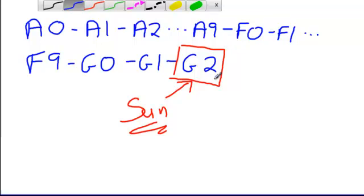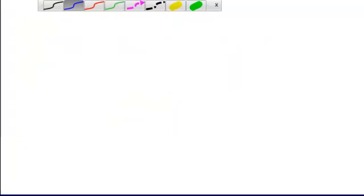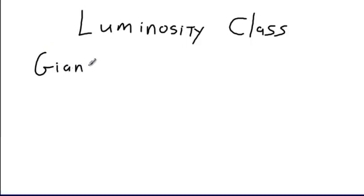Now that's the first dimension of the spectral classification. There is another one that we talk about in the text that is also important and very important when we look at our HR diagrams. And that is what we call the luminosity class. So we're going to take a look at the luminosity class of stars.